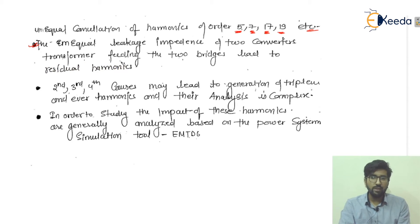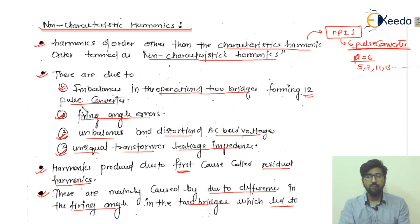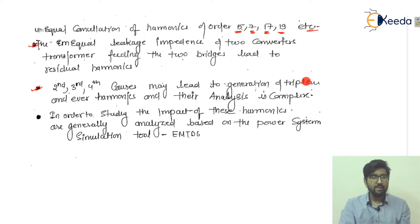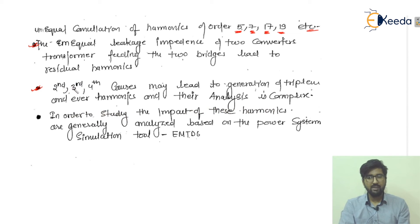The second, third, and fourth causes — firing angle error, unbalances and distortions of the AC bus voltage, and unequal transformer leakage impedance — may lead to the generation of triplen and even harmonics. The analysis of these even harmonics is complex.